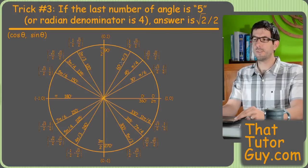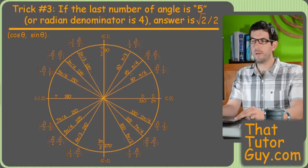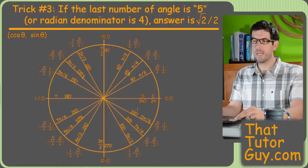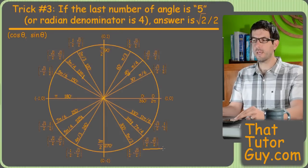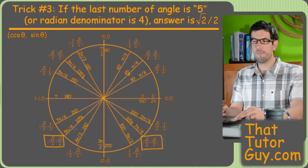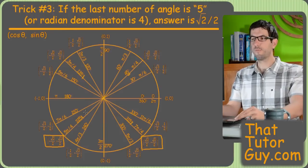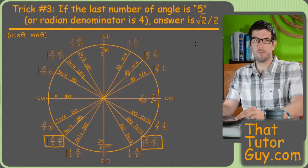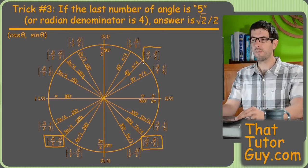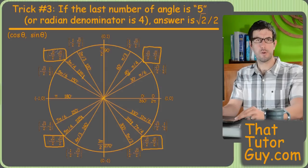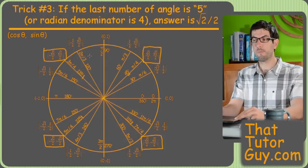Alright, this is a big trick that no one seems to notice until I point it out, but if the last number in the angle, in the degree angle, is five, then both sine and cosine are square root of two over two. And that's because if you have a five as the last digit, that means your reference angle must be forty-five, but of course forty-five degrees has both a sine and cosine of square root of two over two. So that means that your sine and cosine of any angle that ends in a five is going to be either plus or minus square root of two over two. That's super helpful information, obviously.